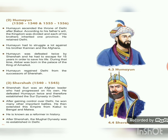Humayun was Babar's son and ascended the throne after Babar. As per Babar's will, the kingdom of the Mughal dynasty was divided among his sons. Humayun followed Babar's will and divided the kingdom among his brothers, ruling over Delhi himself. Humayun had constantly to struggle with his brother Kamran and even the Afghan invaders. Humayun lost twice against Afghan invader Sher Shah and escaped, remaining hidden for 15 years. Meanwhile, Humayun's wife gave birth to Akbar in the palace of the king of Amarkot. Later, Humayun regained Delhi from the rulers that ruled after Sher Shah.